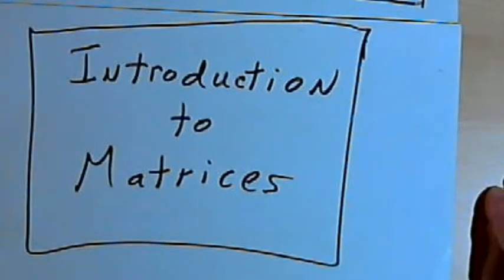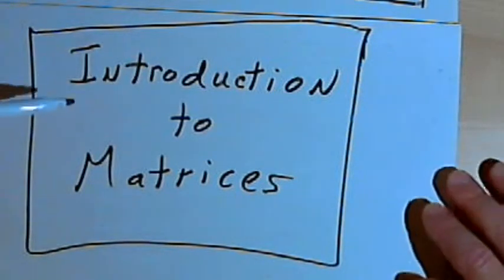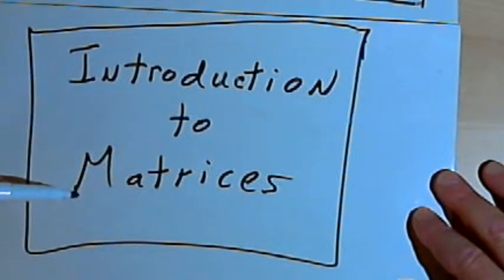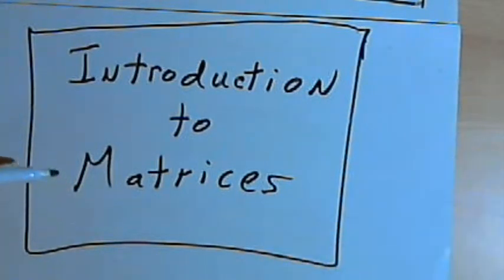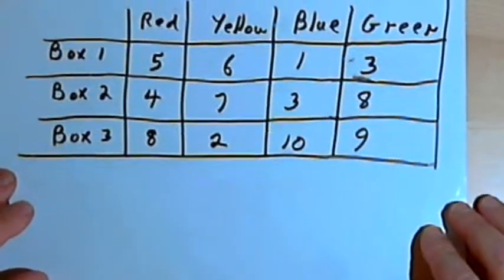This video is provided as supplementary material for courses taught at Howard Community College. This video is going to be a very basic introduction to matrices. We can think of a matrix as a way of arranging information in rows and columns.